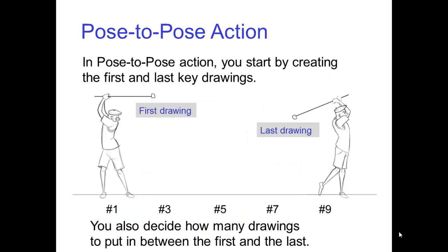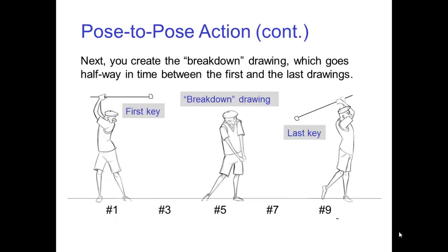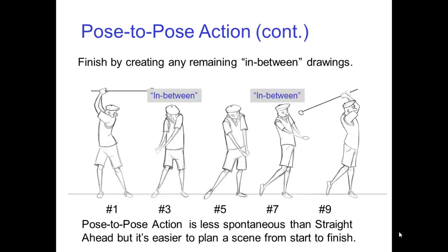In pose-to-pose action, you start by creating the first and last key drawings. You also decide how many drawings to put in between. Next, you create the breakdown drawing, which goes halfway in time between the first and the last drawing. You then finish by creating any remaining in-between drawings. Pose-to-pose action is less spontaneous than straight-ahead, but it's easier to plan a scene from start to finish.